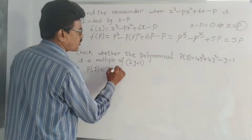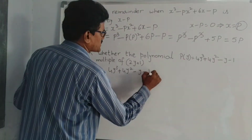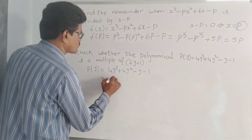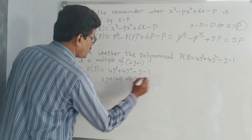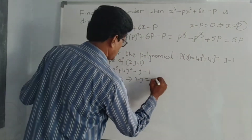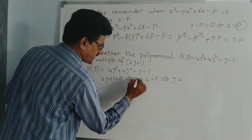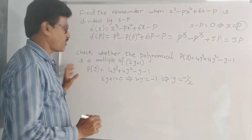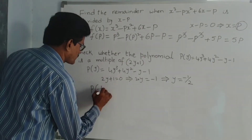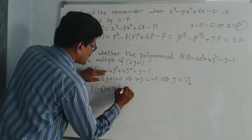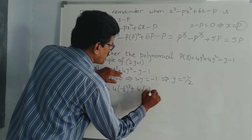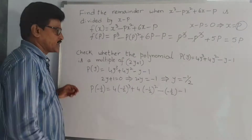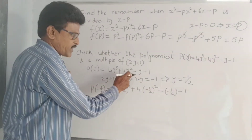Given polynomial is 4Y cubed plus 4Y squared minus Y minus 1. We have to find the zero of this linear polynomial. 2Y plus 1 equal to 0 implies 2Y equal to minus 1, so Y equal to minus 1 by 2. Now substitute Y equal to minus half. P of minus half equals 4 into minus half whole cube plus 4 into minus half whole square minus minus half minus 1. Take care about symbols here — minus Y means put minus symbol first with minus half in brackets.